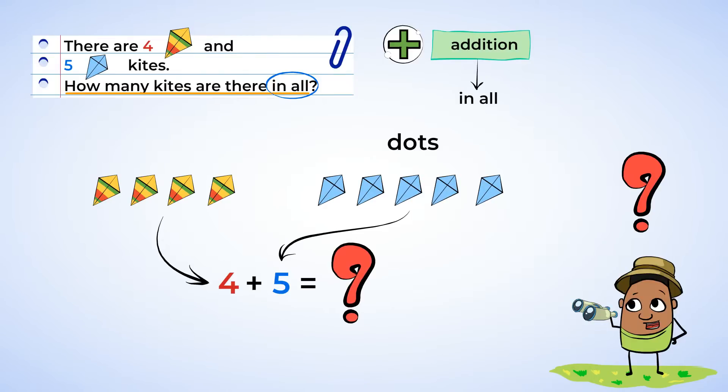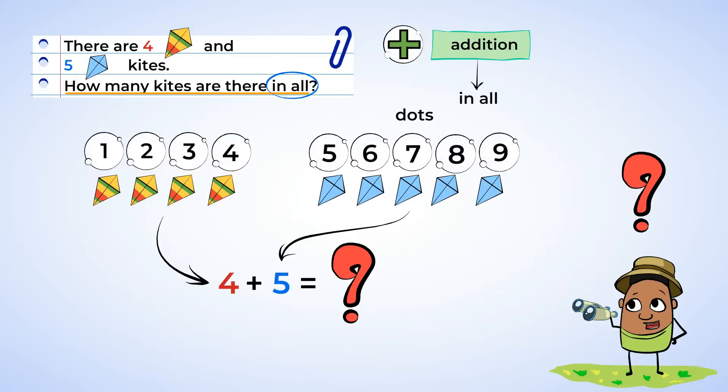Now, we just need to do the best part. Adding. We can use the picture we already drew to help us count. One, two, three, four, five, six, seven, eight, nine. Four plus five equals nine. Will saw nine kites all together.